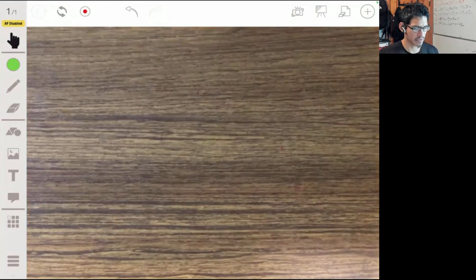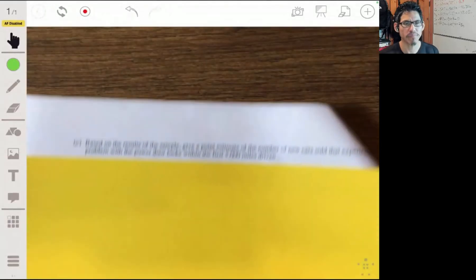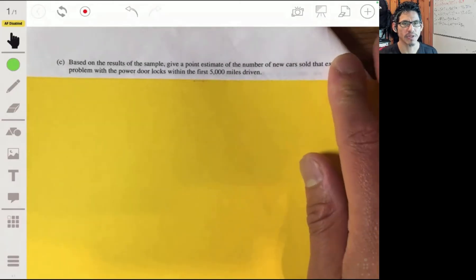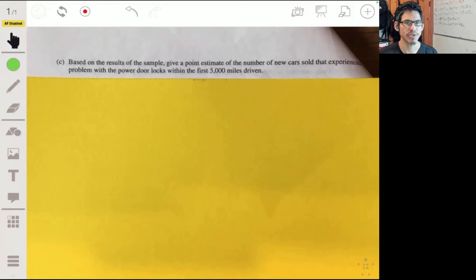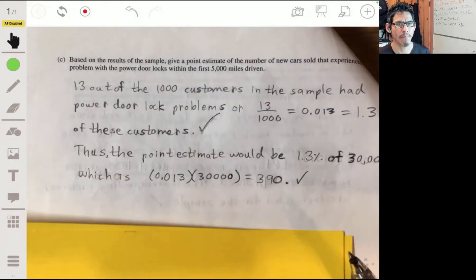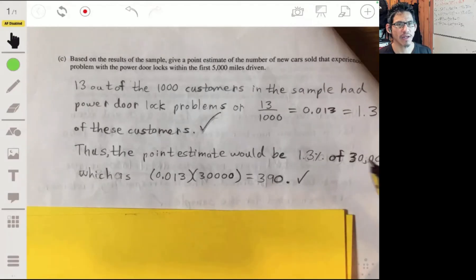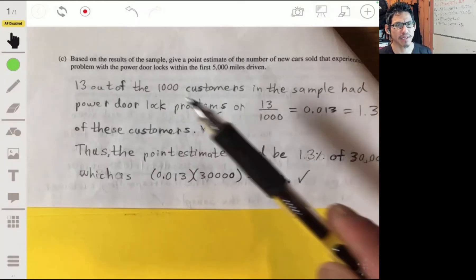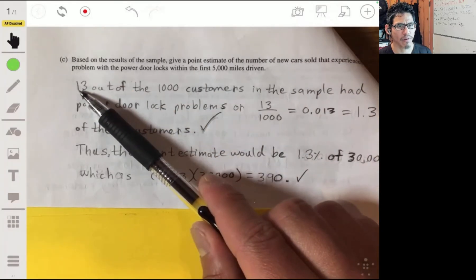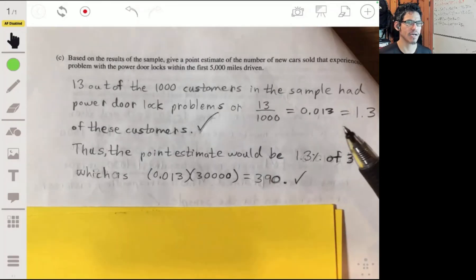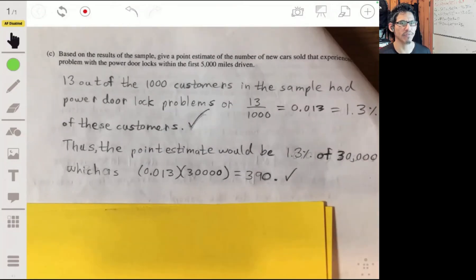The last part: Based on the results of the sample, give a point estimate of the number of new cars sold that experienced a problem with the door locks within the first 5,000 miles. Remember that we took a sample of a thousand, and in that sample of a thousand we found 40 had a problem. But essentially there were only 13 total out of the thousand that had a problem with the door lock. So just think of it like that: out of those thousand, how many had a problem with the door lock? And that's going to be 1.3%.